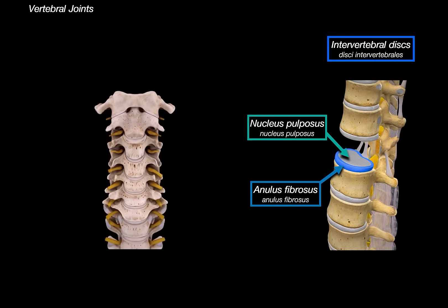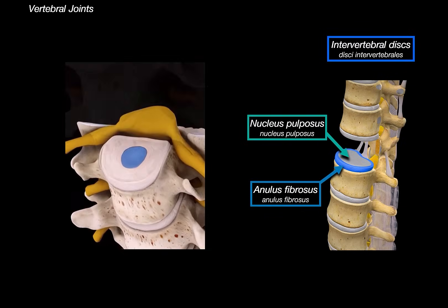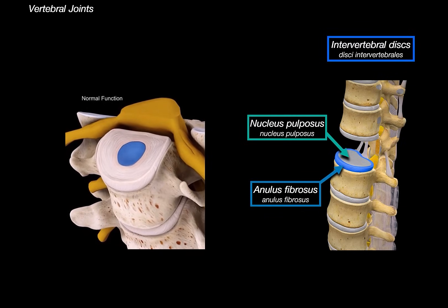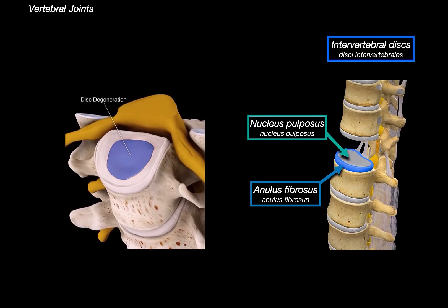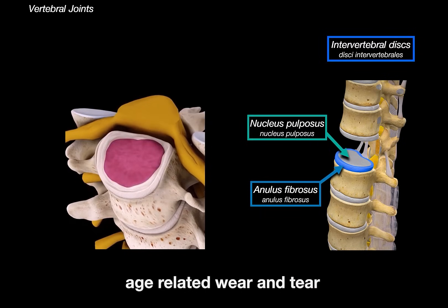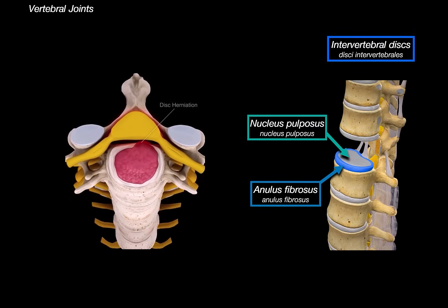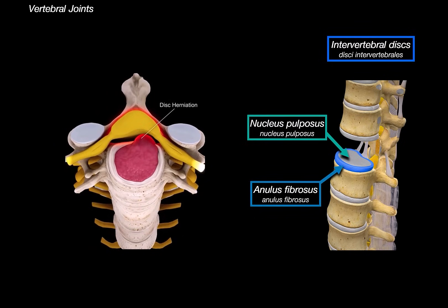Nerve roots extend from the spinal cord through openings on either side of the vertebrae. The intervertebral discs prevent friction between vertebral bodies and allow smooth controlled movement during bending, twisting and lifting. However, the integrity of the discs can be compromised and they can start to degenerate — often due to age-related wear and tear, repetitive stress or trauma. When degeneration weakens the annulus fibrosus, the nucleus pulposus can herniate outwards, creating what we call a herniated disc.